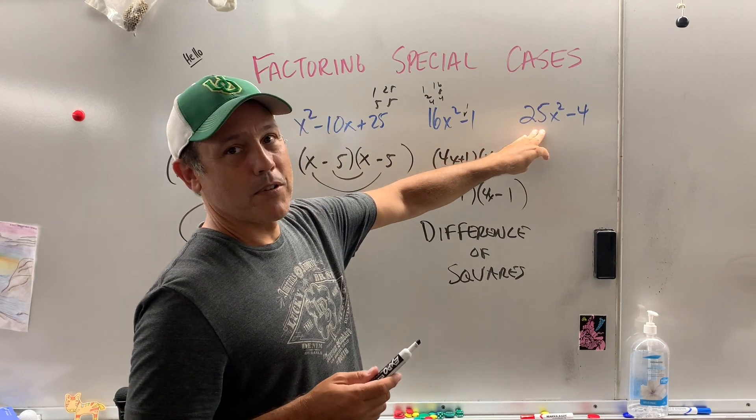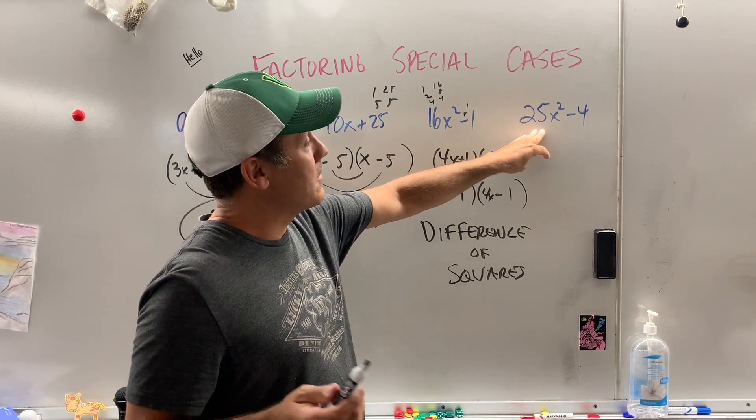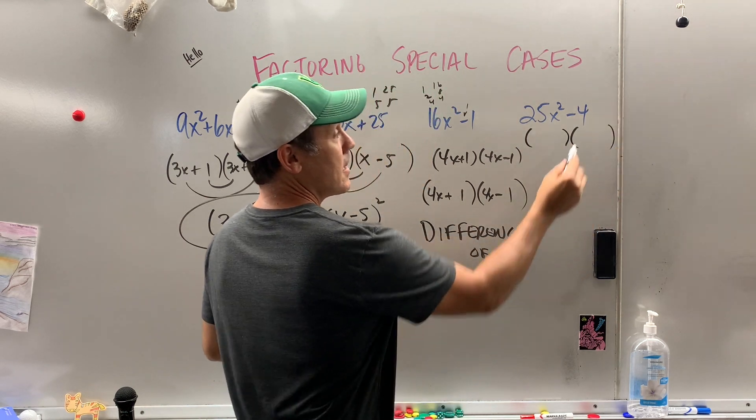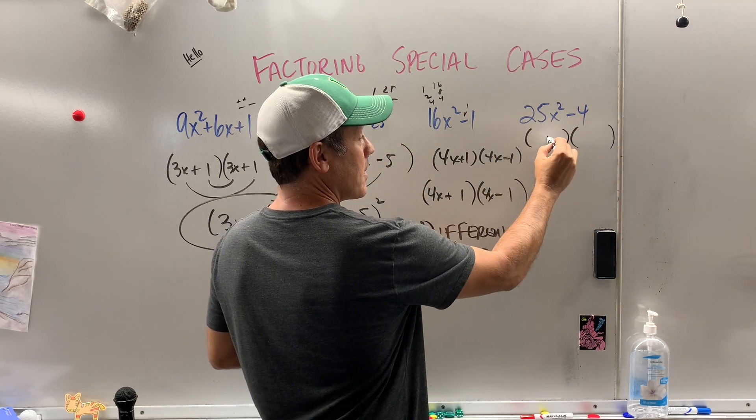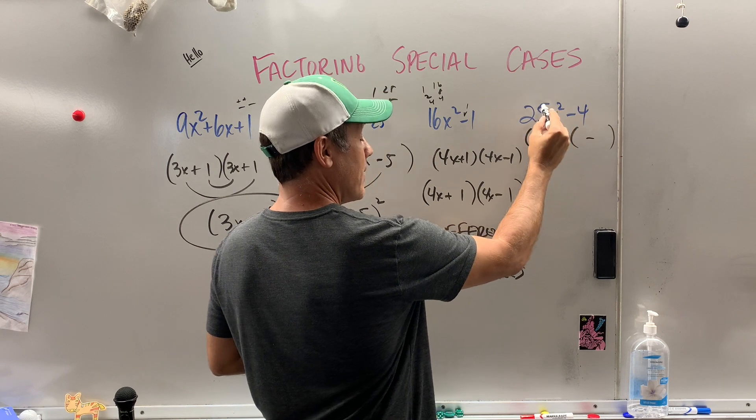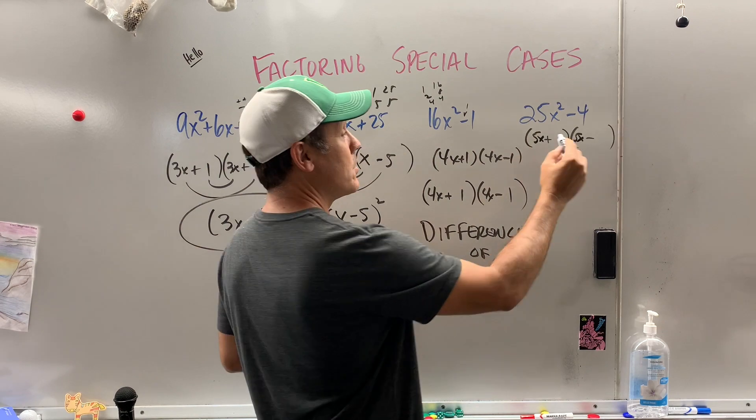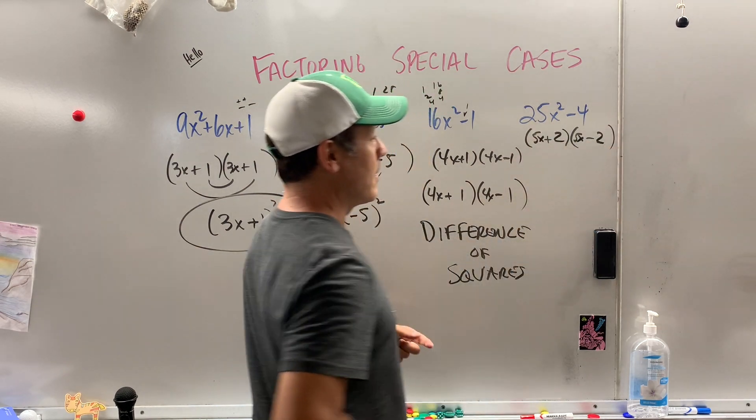But again, see, this is 5x plus 2, 5x minus 2. I just know that because I've done a million of these. But let's do this nice and nice. What are my signs? What times what gives you a minus? Factors of 25, I'm going 5x. 5x factors of 4: 1 and 4, 2 and 2. And there we go.